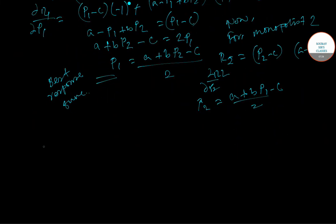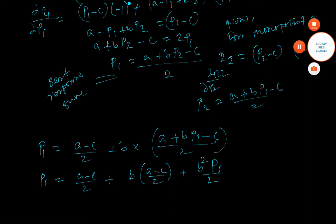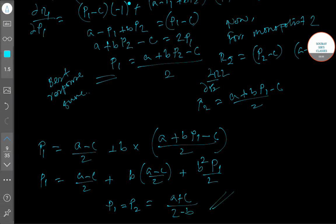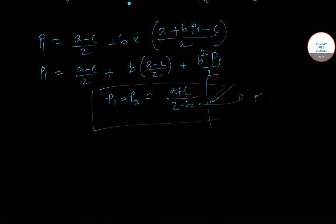Similarly for monopolist two, p2 equals a plus b times p1 minus c, divided by 2. Equating the two best response functions, we substitute p2 into the expression for p1 and rearrange. After rearranging we get p1 equals p2 equals a minus c divided by 2 minus b. The correct answer for the equilibrium price is option A.